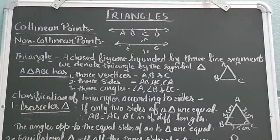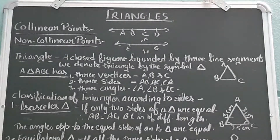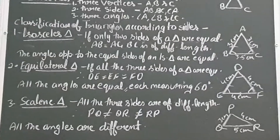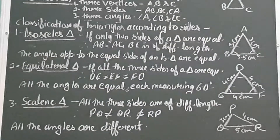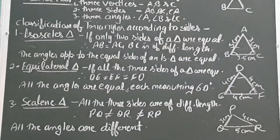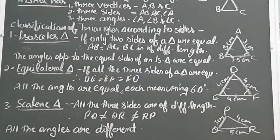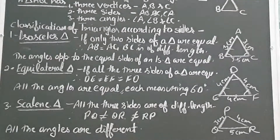Now, classification of triangles according to their sides. According to the sides of a triangle, triangles are classified into three types.